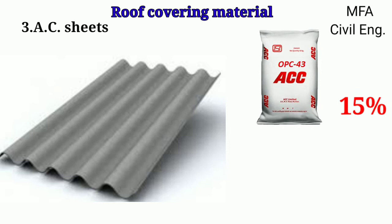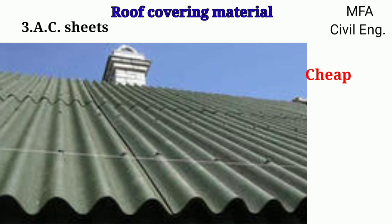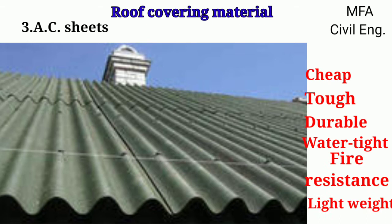Asbestos cement material is obtained by combination of cement with about 15% of asbestos fiber. Coverings made up of these materials are cheap, tough, durable, watertight, fire resistant and light in weight.